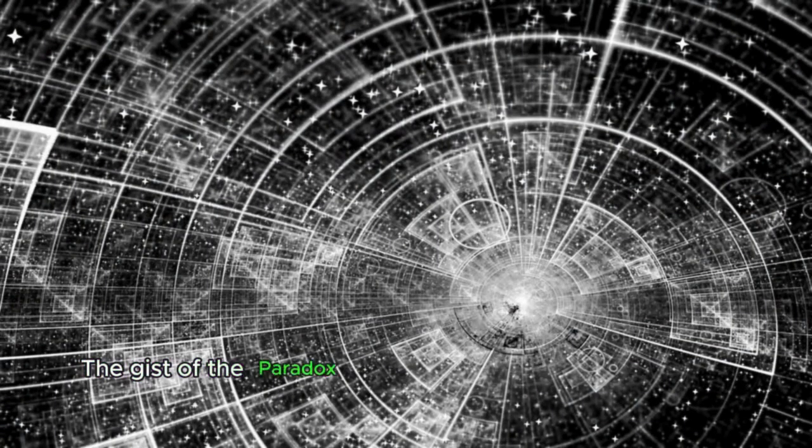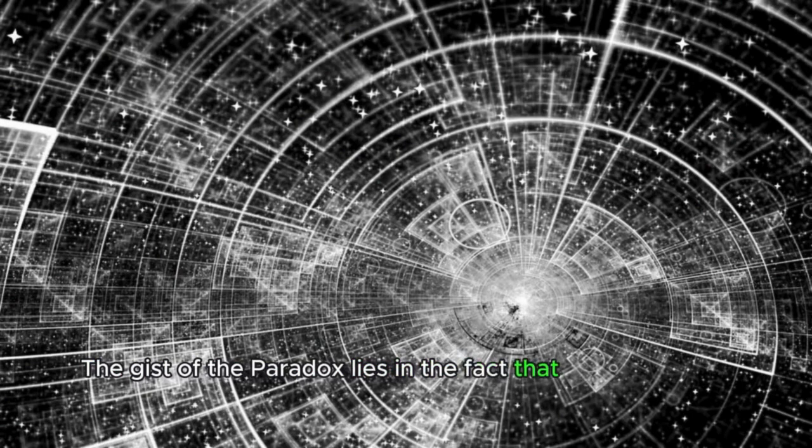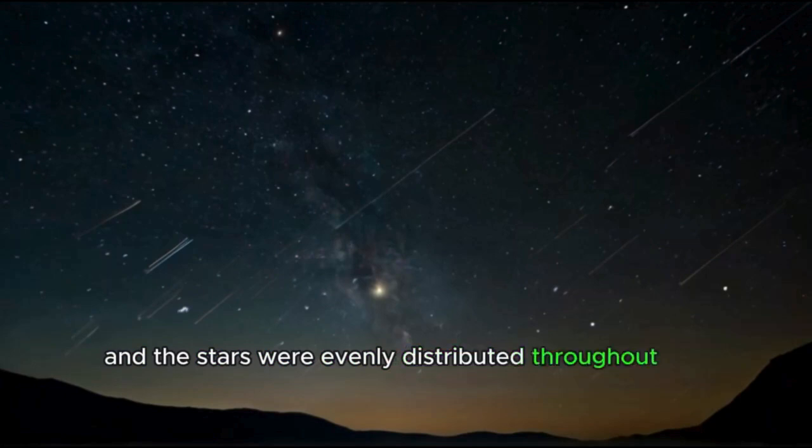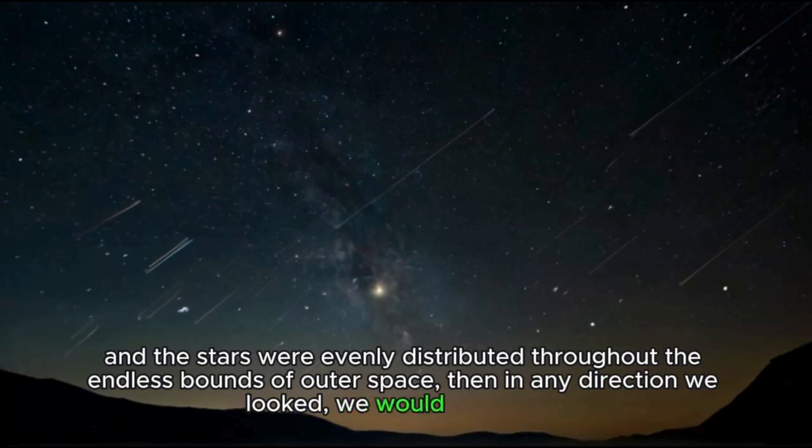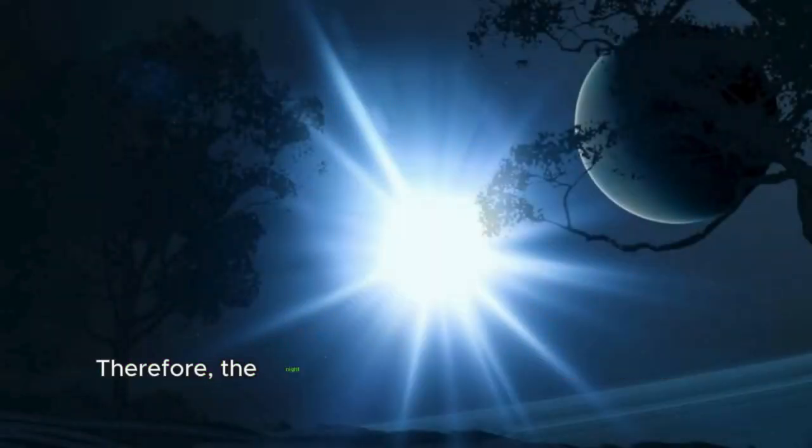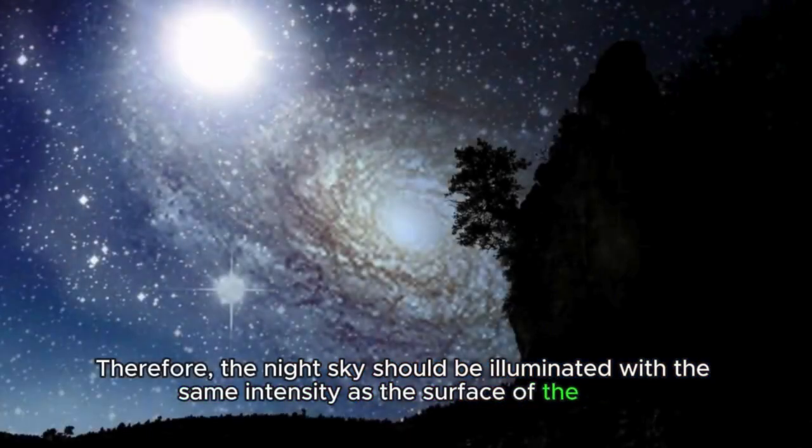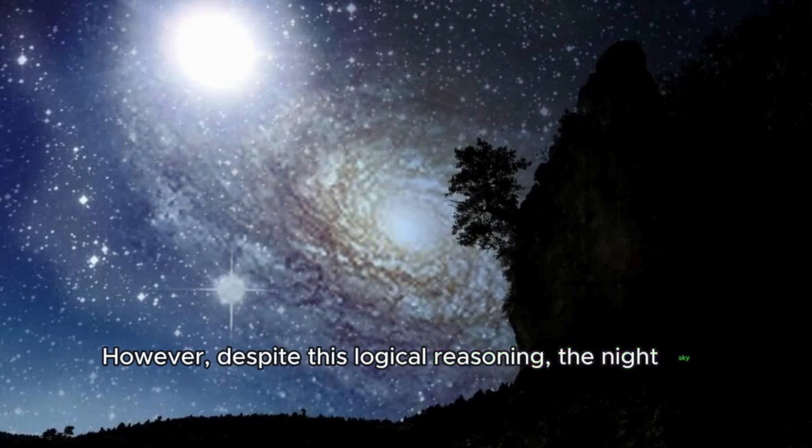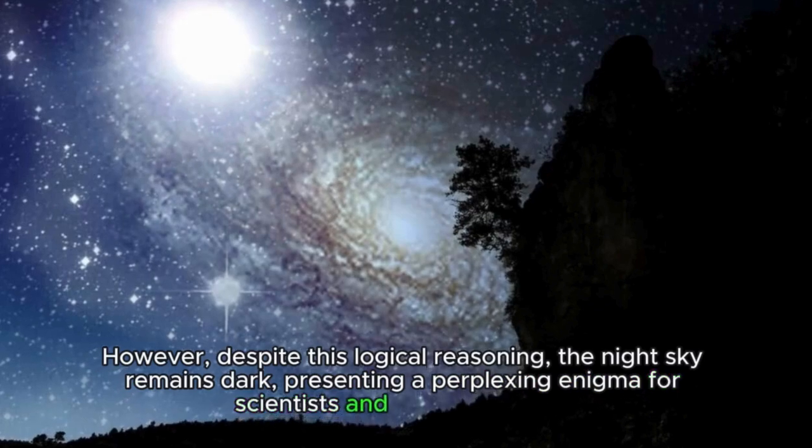The gist of the paradox lies in the fact that if the universe were truly infinite and eternal, and the stars were evenly distributed throughout the endless bounds of outer space, then in any direction we looked, we would see a star. The light from these stars, however distant, would eventually reach our planet. Therefore, the night sky should be illuminated with the same intensity as the surface of the sun. However, despite this logical reasoning, the night sky remains dark, presenting a perplexing enigma for scientists and stargazers alike.